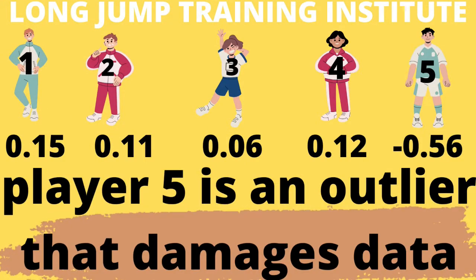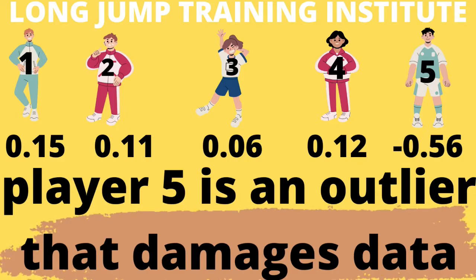That minus 0.56 value — which was depleting or ruining our results within this set of five numbers — is called an outlier. Outliers are values that ruin our analysis significantly. I hope you've understood this concept: in use cases where outliers are present, even a single outlier can greatly skew your results.